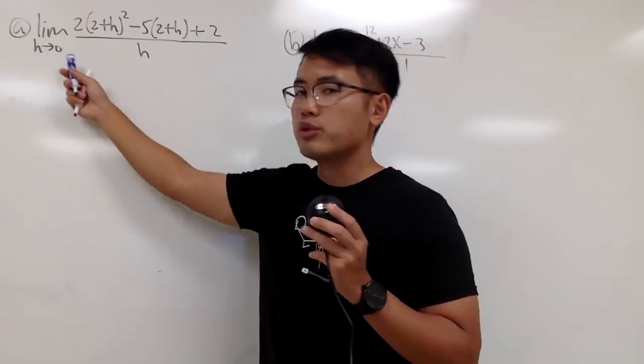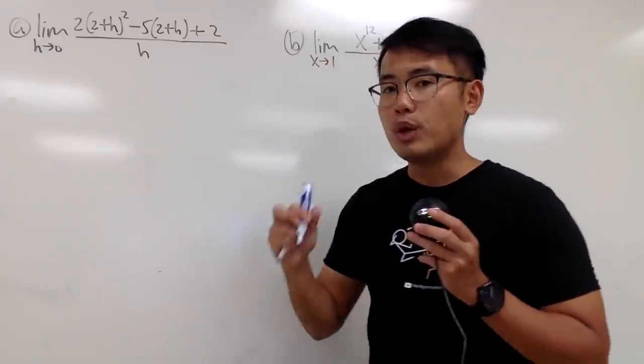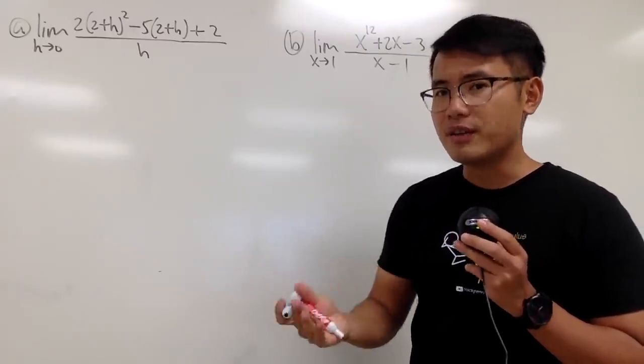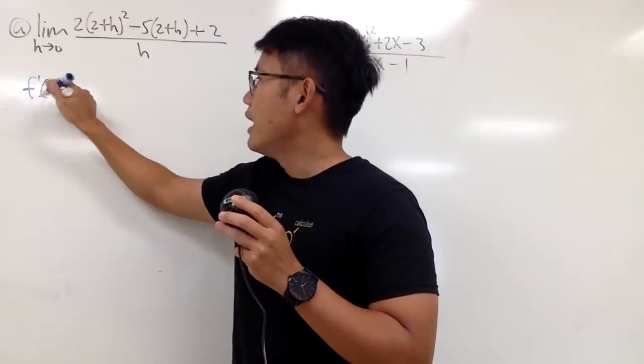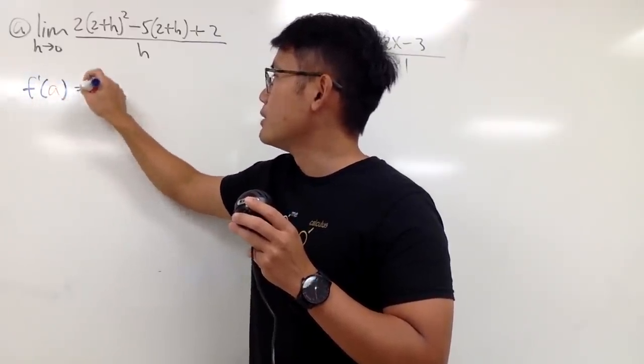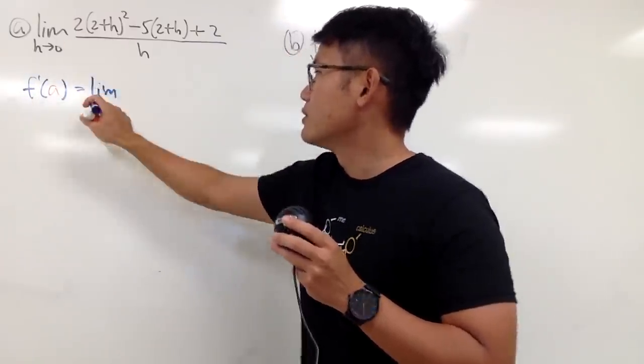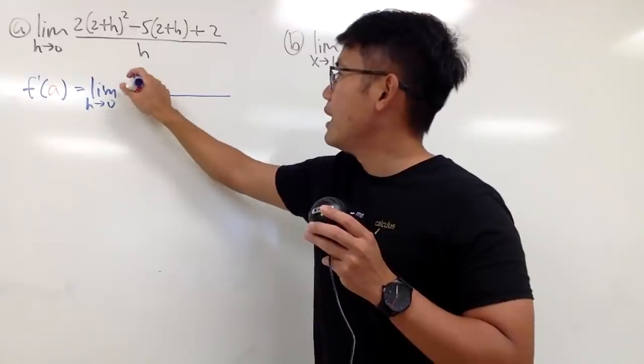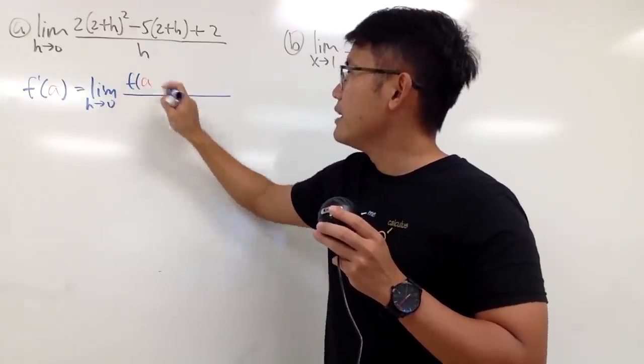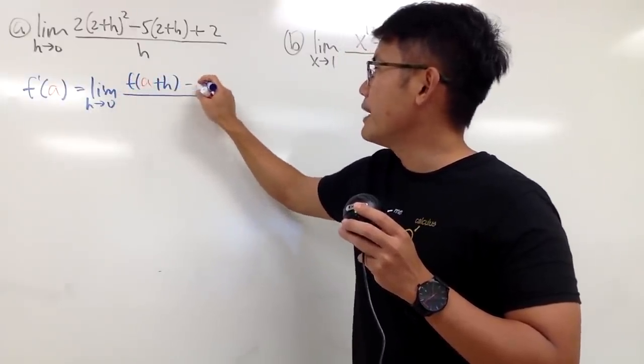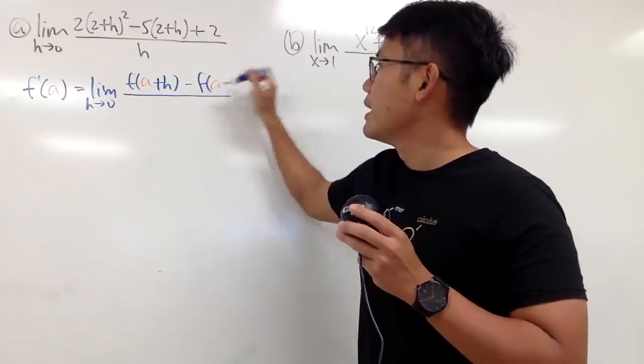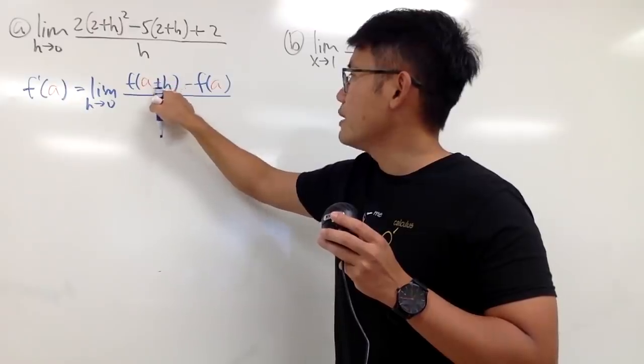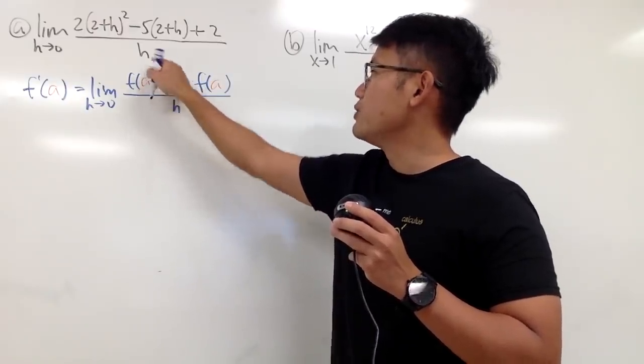This one, we have the limit as h approaching 0, and on the bottom we have just an h, right? So let me first put down the definition of f' of a, and I'm talking about the one with h, of course. So let's go ahead and say h approaching 0, and we will have f of whatever the a is, plus h, and then minus f of a, and then on the bottom is h. And of course, I'm using this one because we just have an h on the bottom.